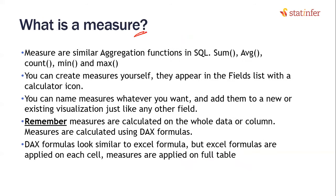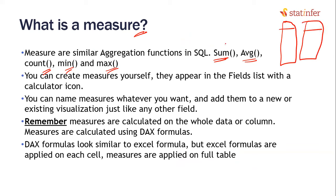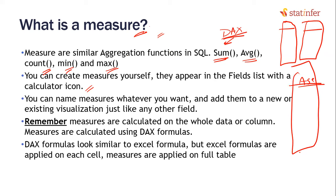A measure is similar to an aggregation function in SQL. If you have worked with SQL, we used functions like average, count, minimum, maximum. You can apply and find out the sum of a particular column or the average of a particular column. To calculate these and store them, we store them in a measure. To calculate this we use DAX formulas. A measure, a formula, and a DAX measure all mean the same thing. For example, if you have an age variable, average age is a measure.